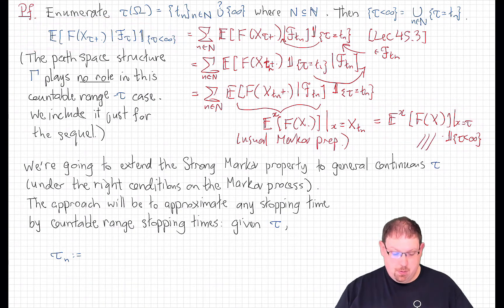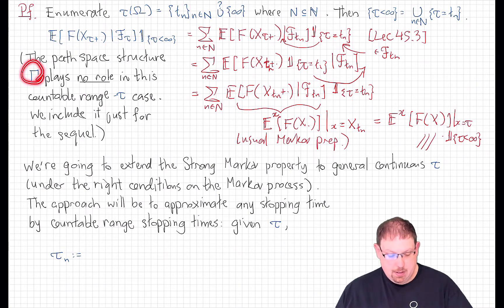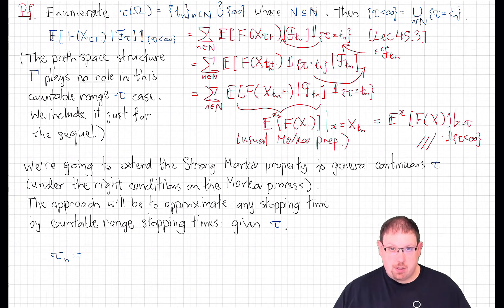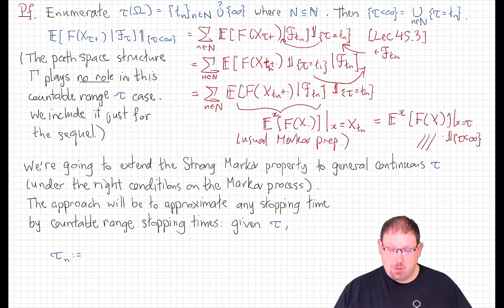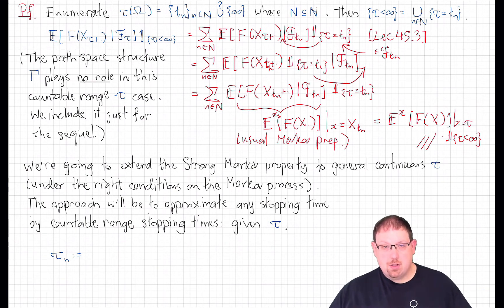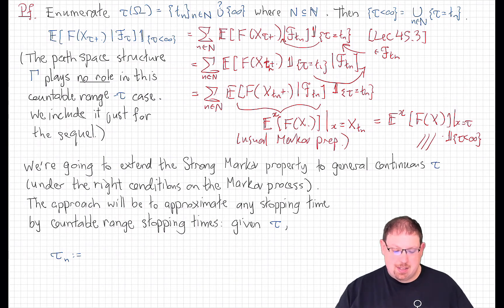Now note from this proof that the path space structure of gamma — be it continuous paths, right continuous paths, or just all functions from the positive time interval into S — played no role. When tau has countable range, it just always works. We've included it here to note that it doesn't matter which version of the process we choose. This continuous time but discrete-valued stopping time case works in any path space realization.